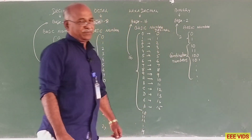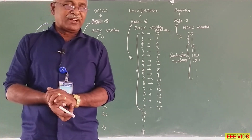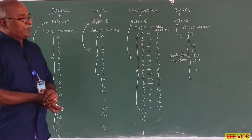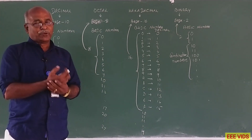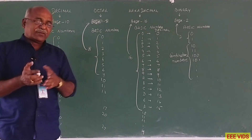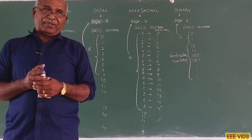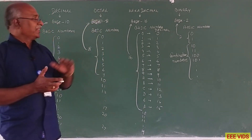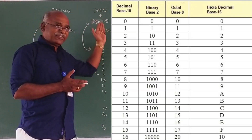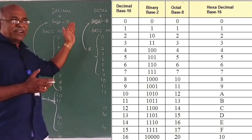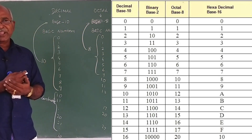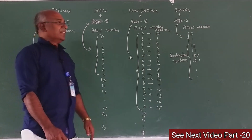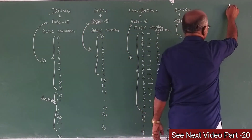So these are the 4 number systems we use. In the digital side, we use these 4 number systems: decimal, octal, hexadecimal, and binary. Next, we look at other number system to decimal conversion.